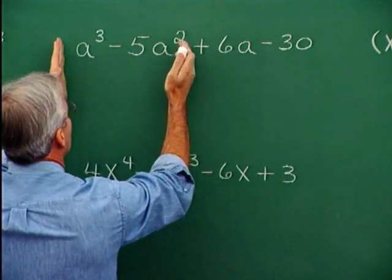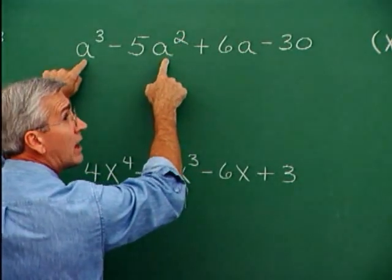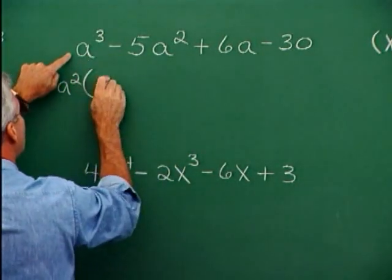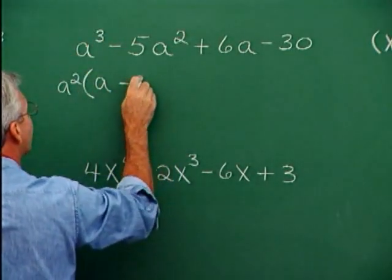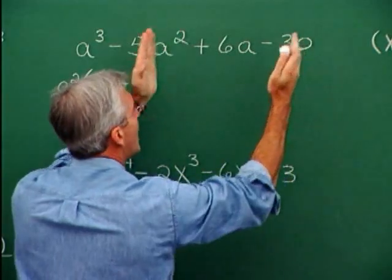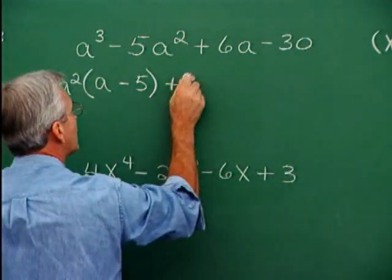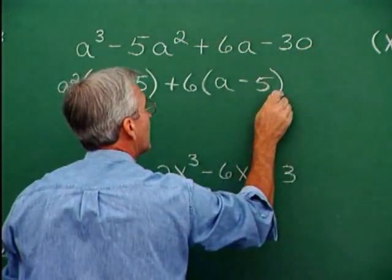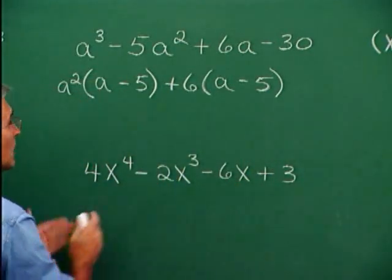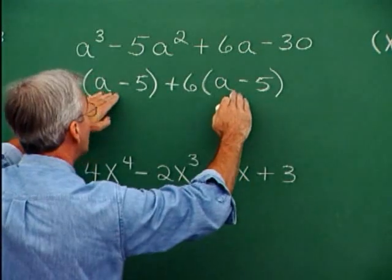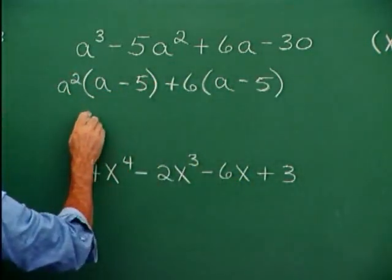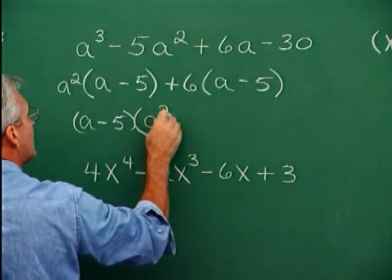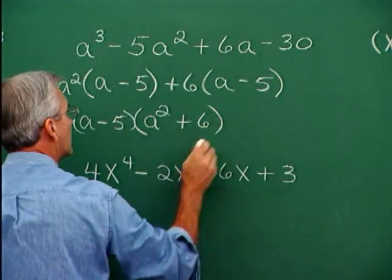Take the common factor out of the first group. I see a squared is common to both terms, so I'll pull a squared out. When I pull a squared out of a cubed, I'm left with a. When I pull a squared out of the next term, I'm left with negative 5. For the second group, the common factor is 6. Pull 6 out: 6 out of 6a leaves a, and 6 out of minus 30 leaves minus 5. Now I have a common binomial factor, a minus 5, which I can pull out of both terms. Taking a minus 5 out of the first leaves a squared, and out of the second leaves 6 — giving the factored form.